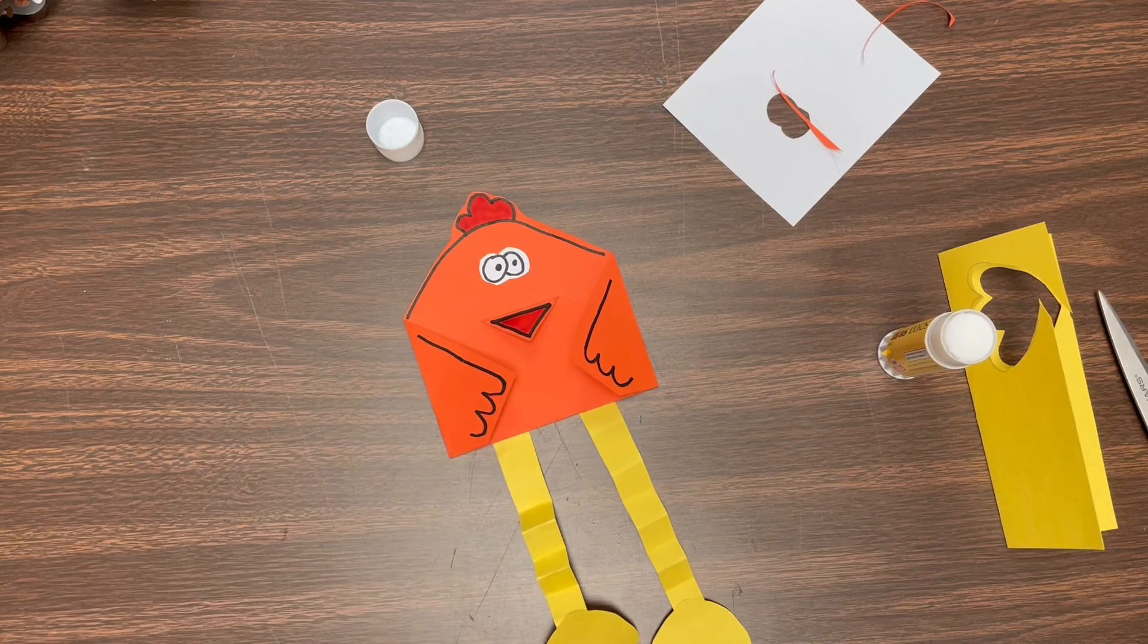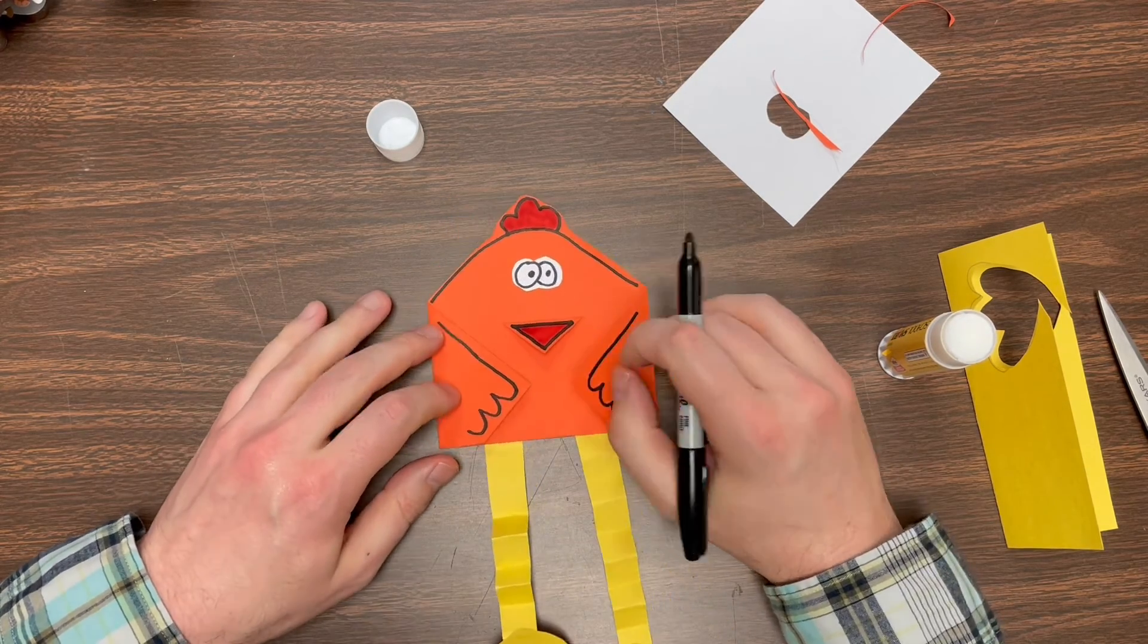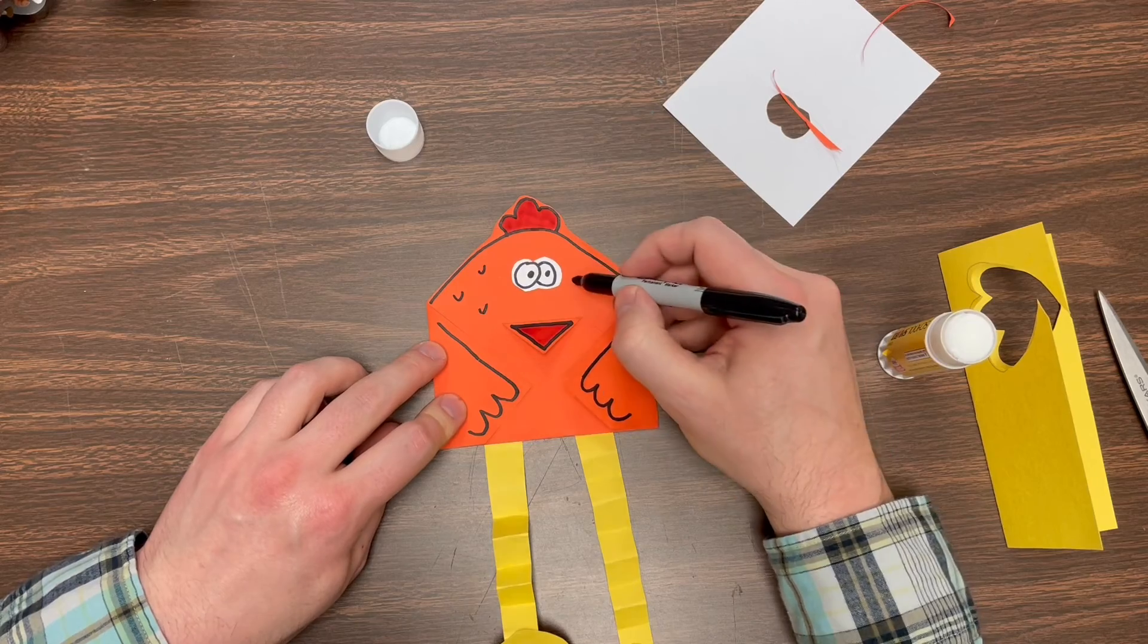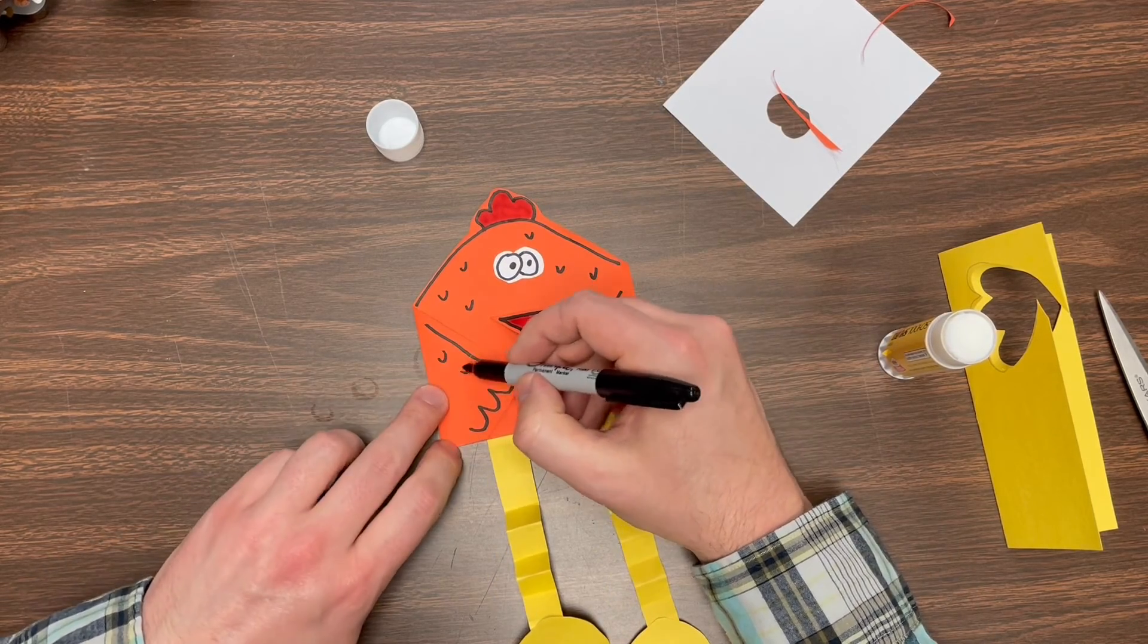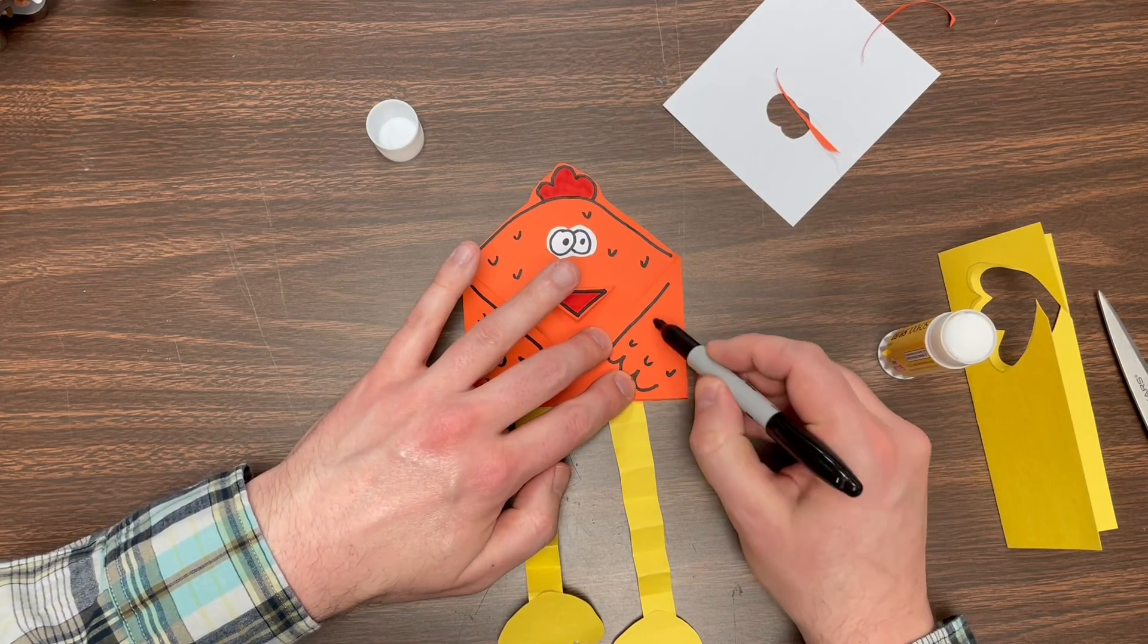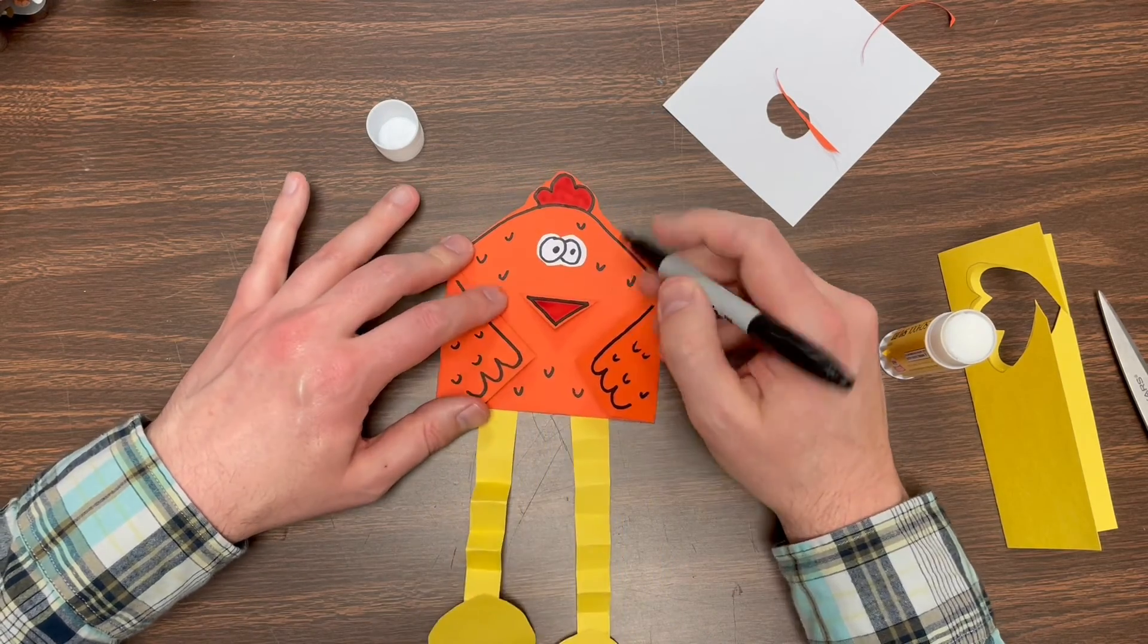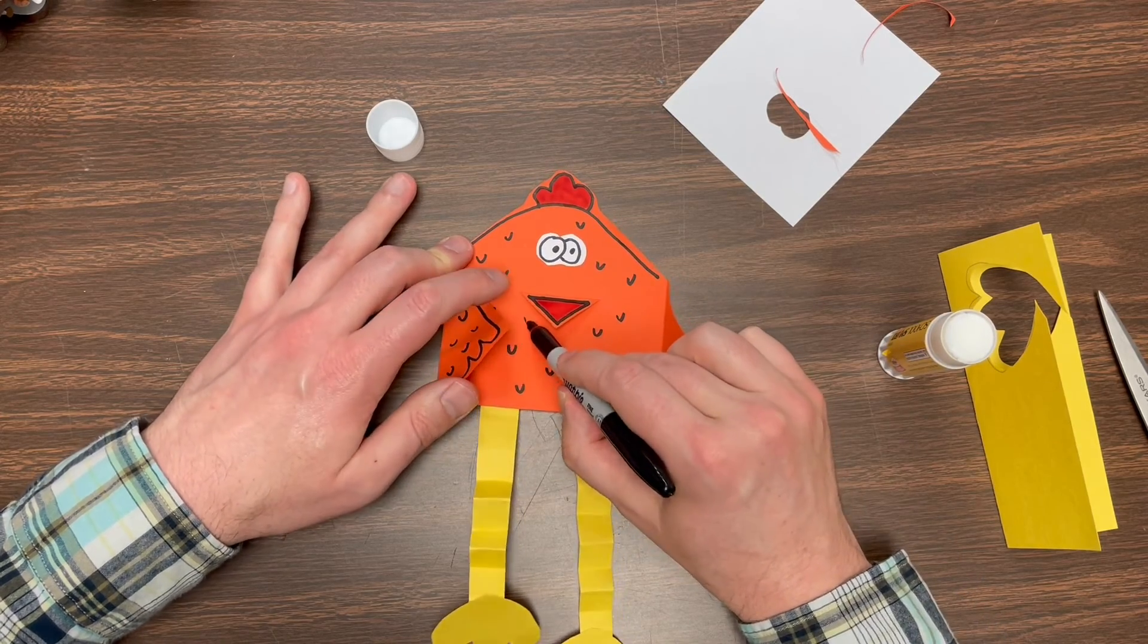And my final final step is if you've ever seen a chicken, you know that they are feathery. So we're going to add some little u-shaped lines to give it that texture that looks like feathers. So I'm going to do those all over the wings with my black crayon marker, whatever you got colored pencil. So I'm going to do those all over to give the illusion of feathers on my chicken.